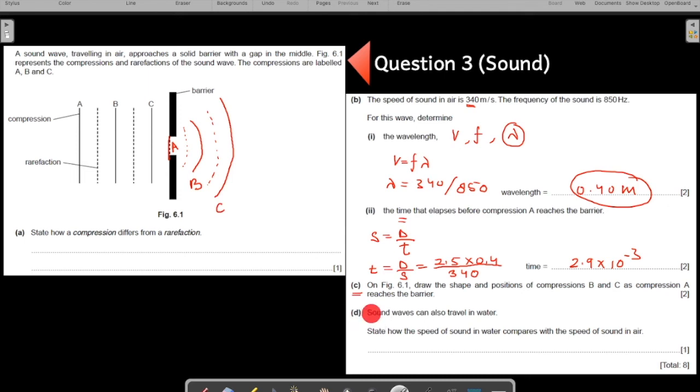Now the last part, D part. The sound waves can also travel in water. State how the speed of the sound in the water compares with the speed of the sound in air. So the speed of the sound in water will be greater than the speed of the sound in air. This is a property of sound that we have learnt in the theory video which was called the properties of sound. Go through it and understand it. In that video you will understand that the sound travels the fastest in solid followed by that in liquid and the slowest in gases.